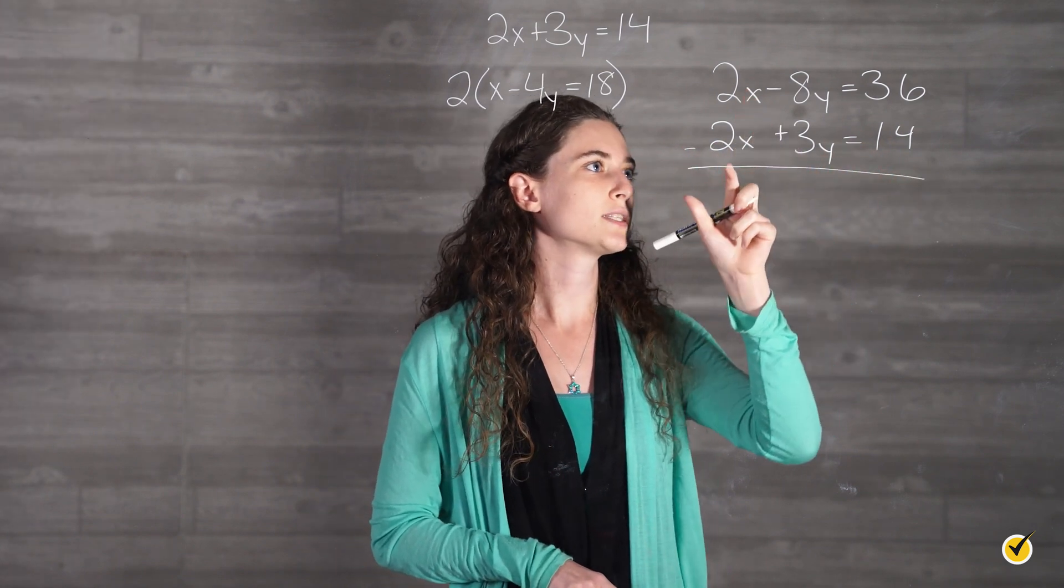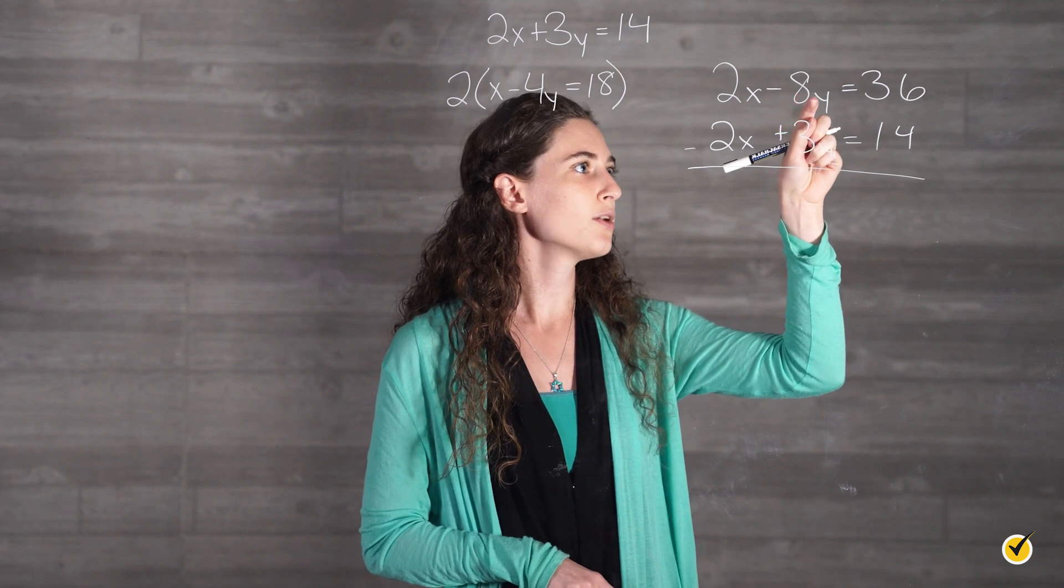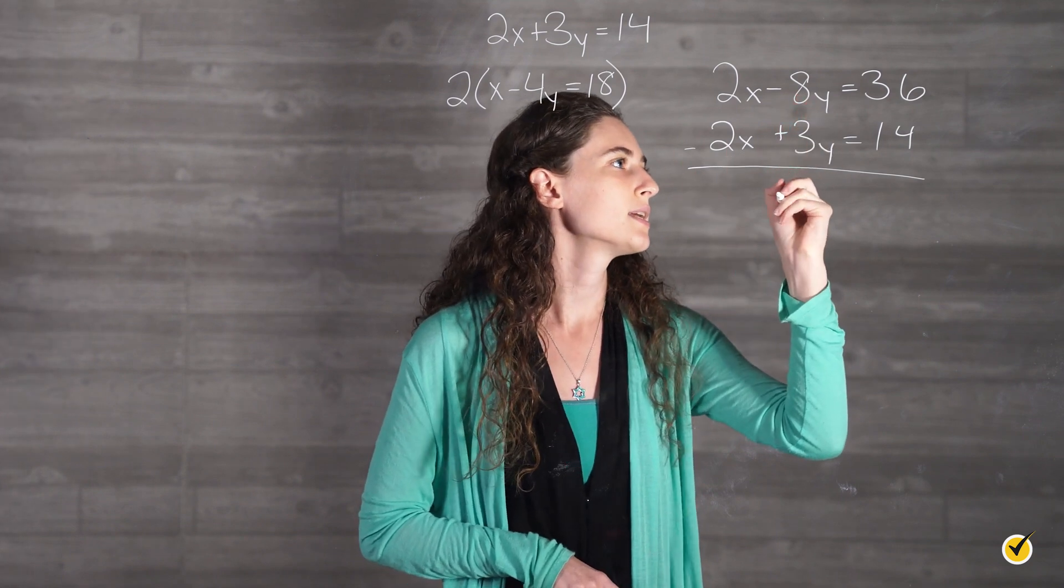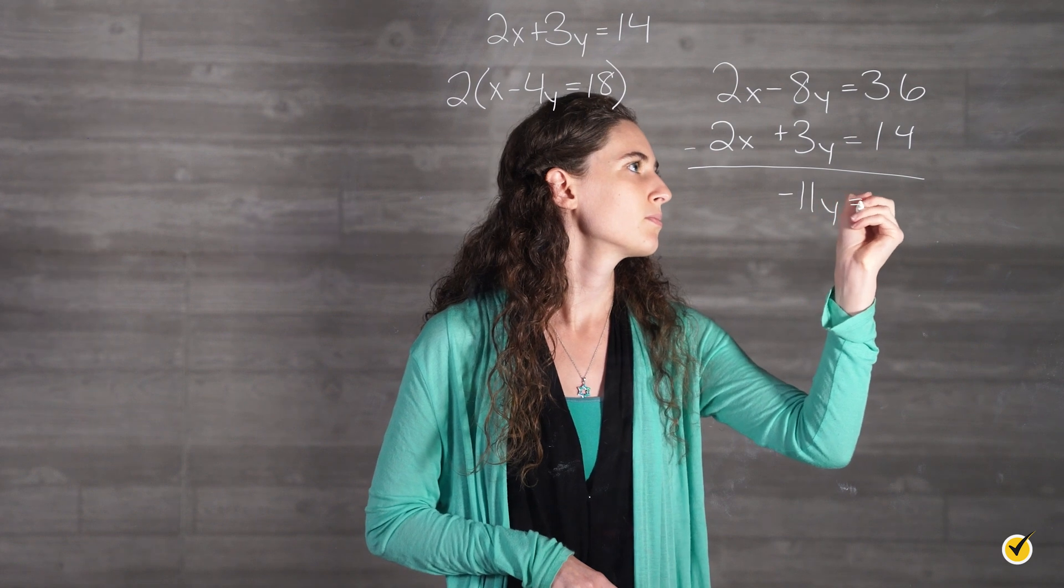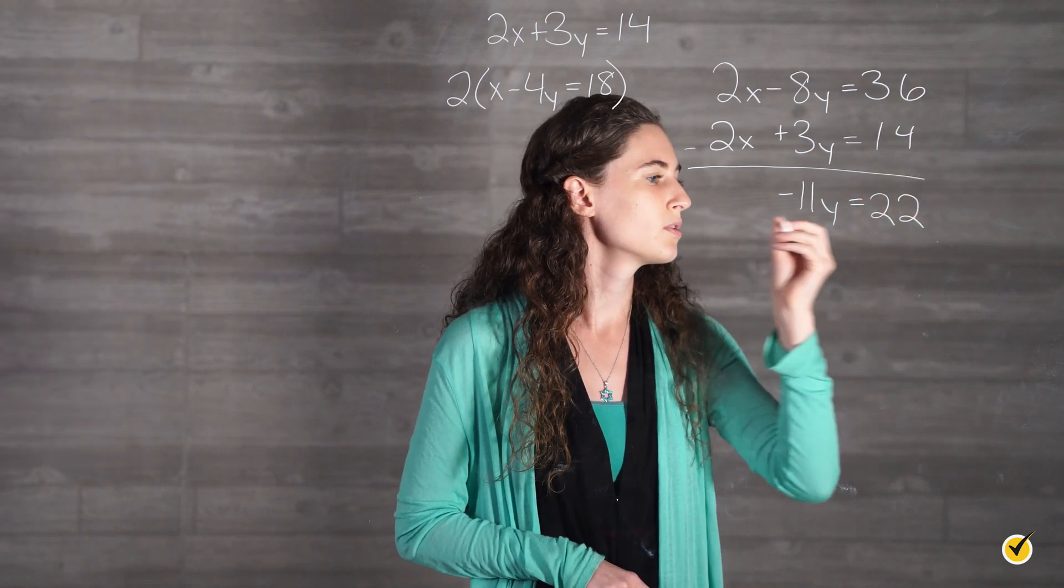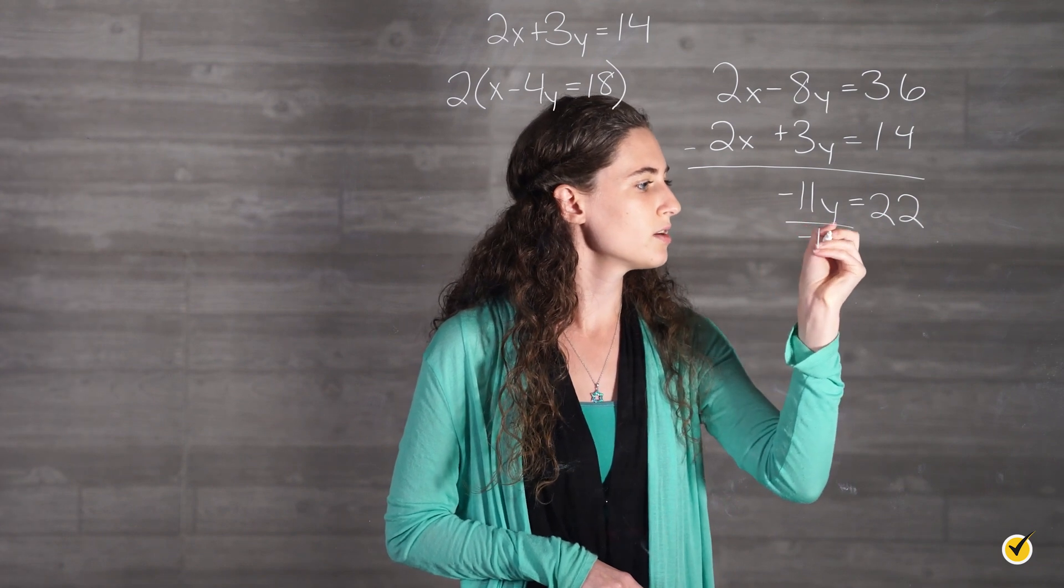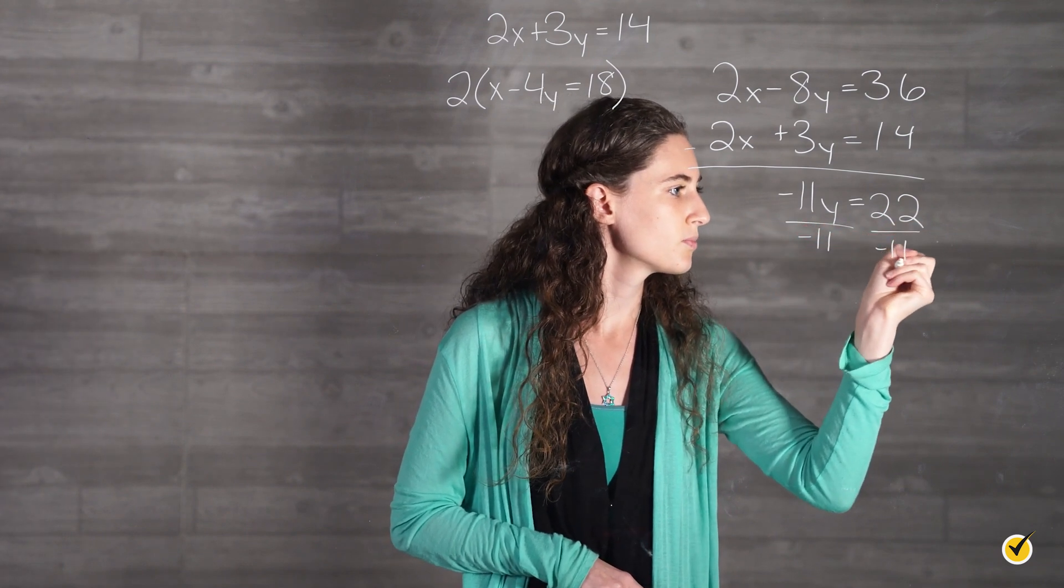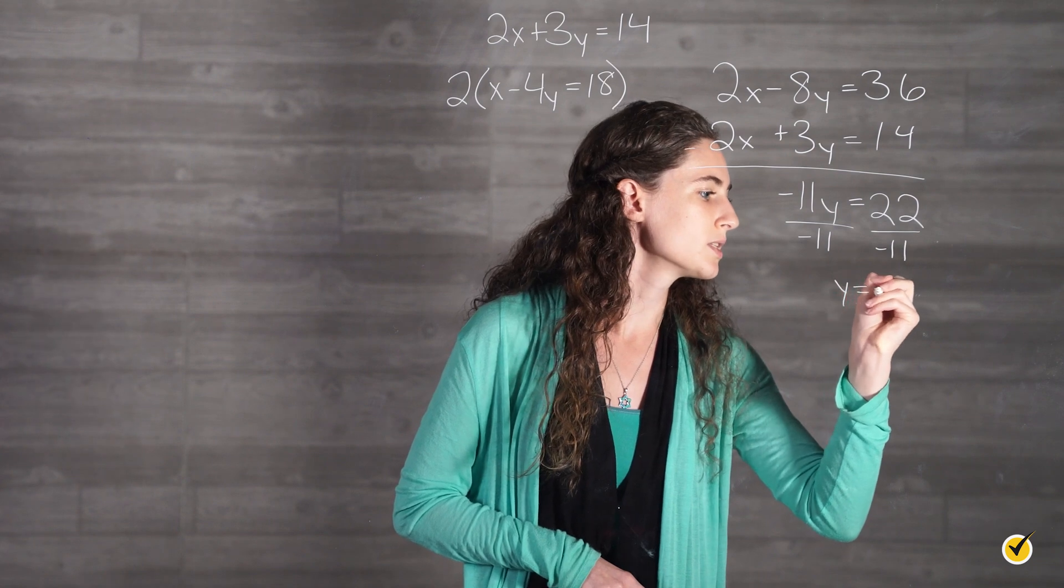2x minus 2x is 0. Negative 8y minus 3y is negative 11y. And 36 minus 14 is 22. If we divide by negative 11 on both sides, we get that y is equal to negative 2.